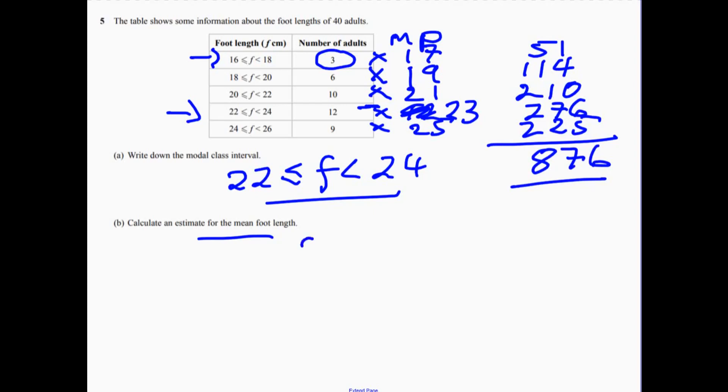So the mean length would be 876, and we're going to divide by 40 because there are 40 adults. Don't make the mistake of dividing by 1, 2, 3, 4, 5. Loads of people end up doing that. And that gives you 21.9.